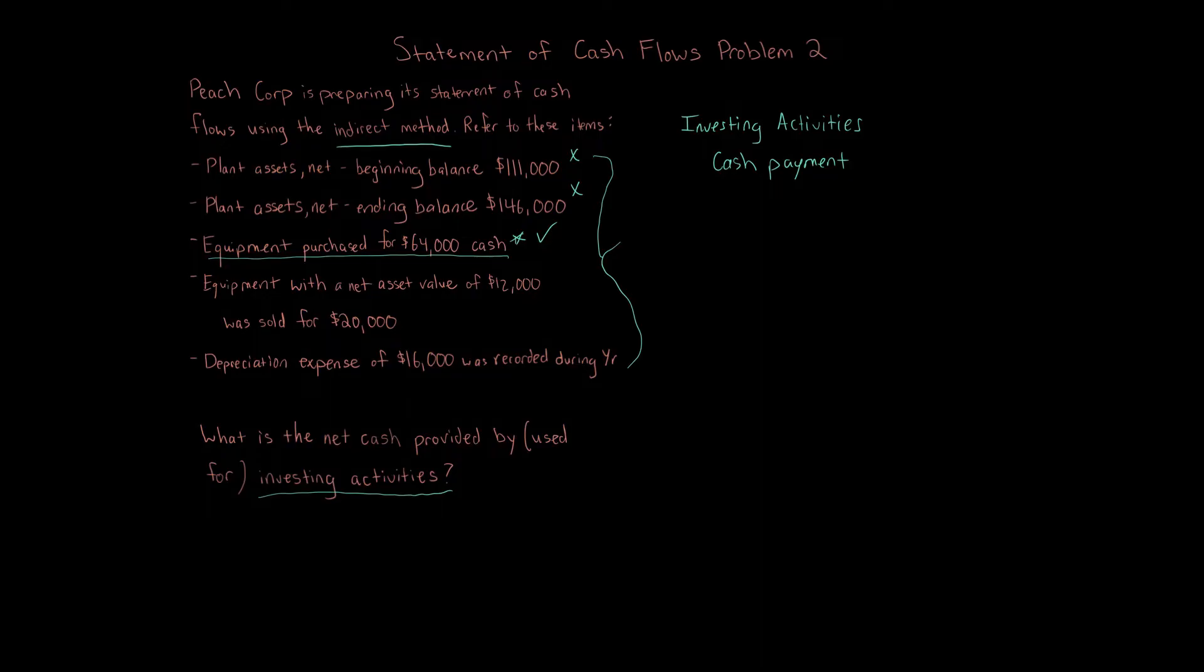Investing activities: the cash payment - the company has paid to purchase the equipment for $64,000. Think about the Statement of Cash Flows. Cash goes up when the company receives cash. Cash goes down when the company pays cash. Inflow, outflow. This is a payment, cash payment for equipment. That means that the cash is going to go down by that amount. So we have $64,000 decrease or cash outflow.